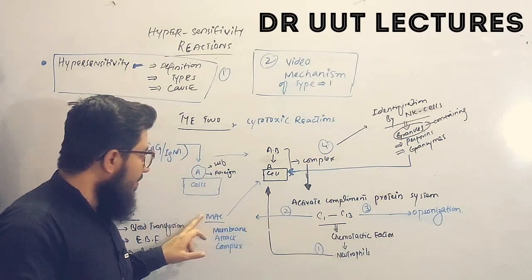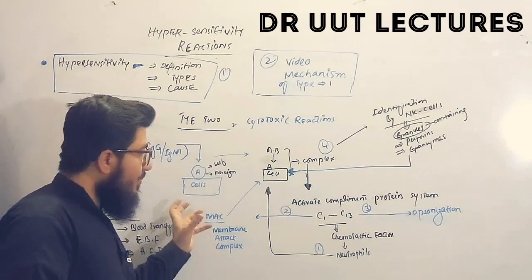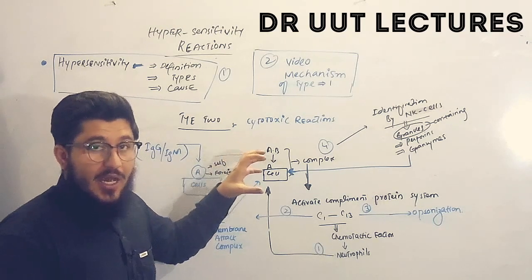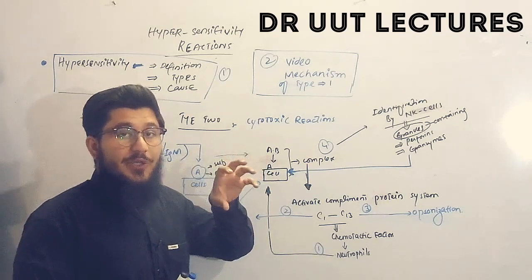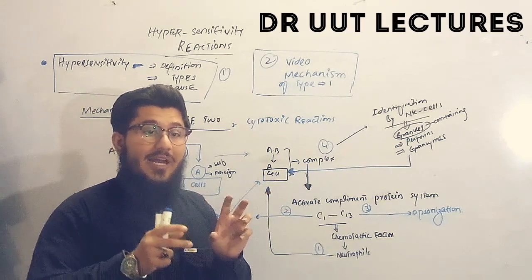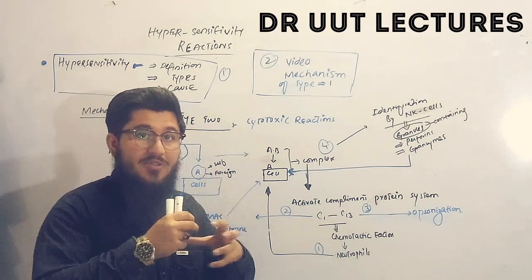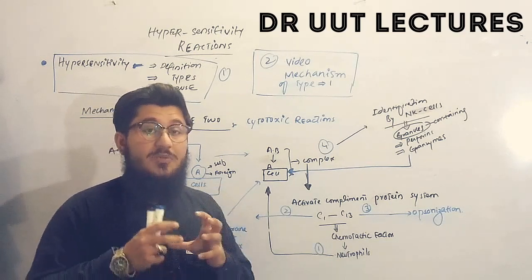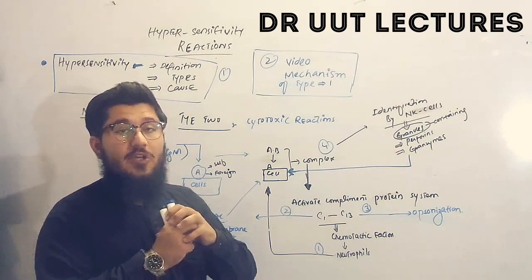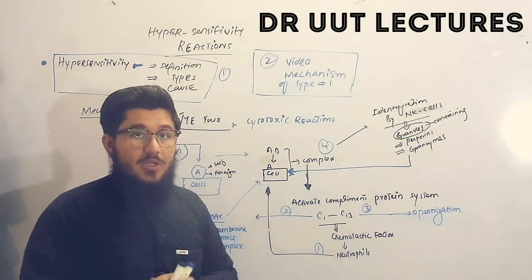In the second way, the complement protein system will form the MAC — membrane attack complex. This complex is responsible for attacking the membrane of the cell, producing pores in the membrane. Due to this, there will be an influx of fluids into the cell, and due to the osmotic pressure of those fluids, the cell cannot maintain itself.